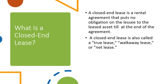Leasing can be of many types: operating lease, financial lease, cross-border lease, leverage lease, capital lease, etc. Broadly, leases are classified into closed-end lease and open-end lease. A closed-end lease is one in which the lessee has no obligation regarding the leased asset at the end of the agreement. The lessor bears liability for maintenance and has more obligations. A closed-end lease is also called a true lease, walk-away lease, or net lease — it is a version of the operating lease.